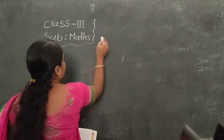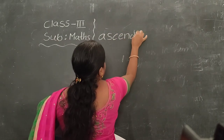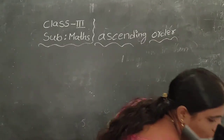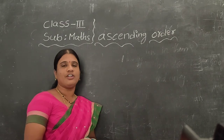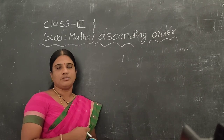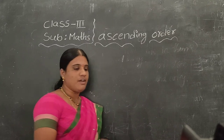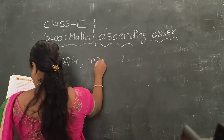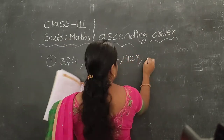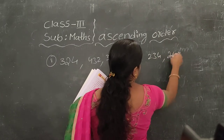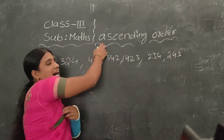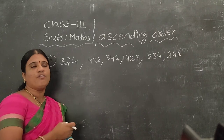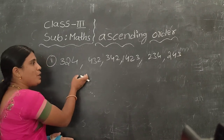The next topic is ascending order. Ascending order means we have to arrange the numbers from small to bigger. You already know which number is smaller and which number is bigger, so based on that we have to arrange in ascending order — from the smallest number to the biggest number.